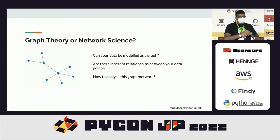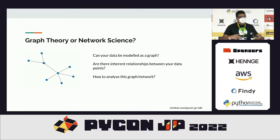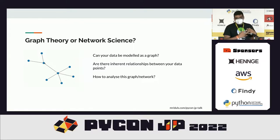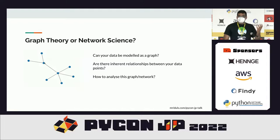If you try hard enough, anything can be modeled as a network. Once you can do that, the network itself has a lot of interesting properties that you can test and calculate. You can find what's important and what's not. The first step is always modeling — if you can model your data as something that looks like this, that's a good start.